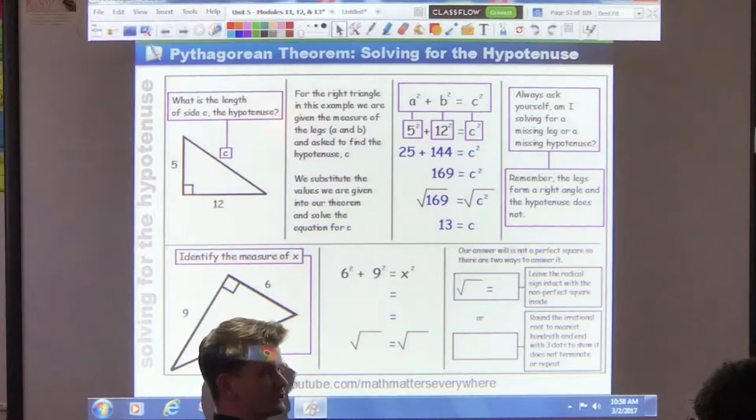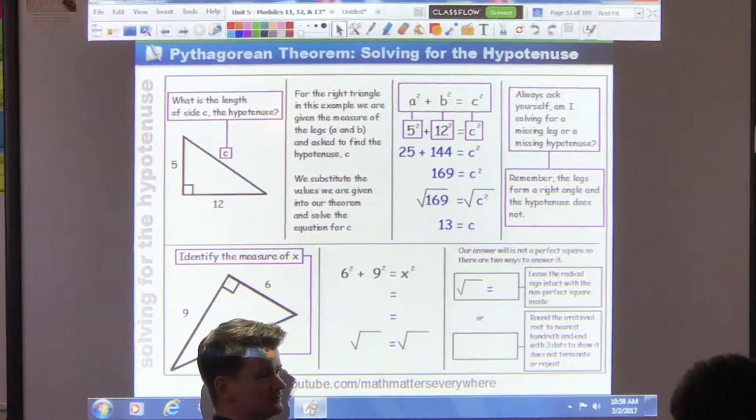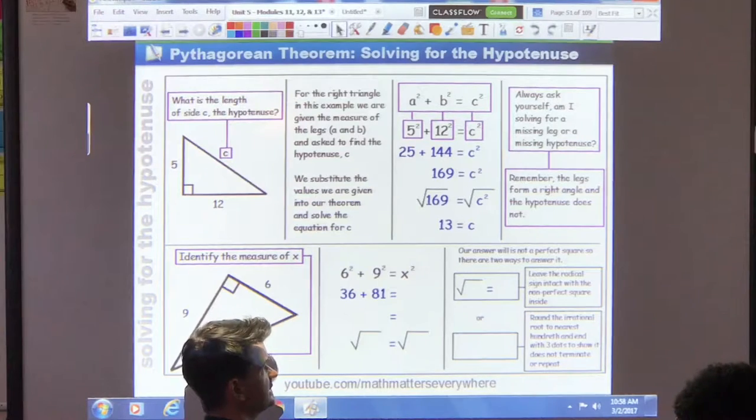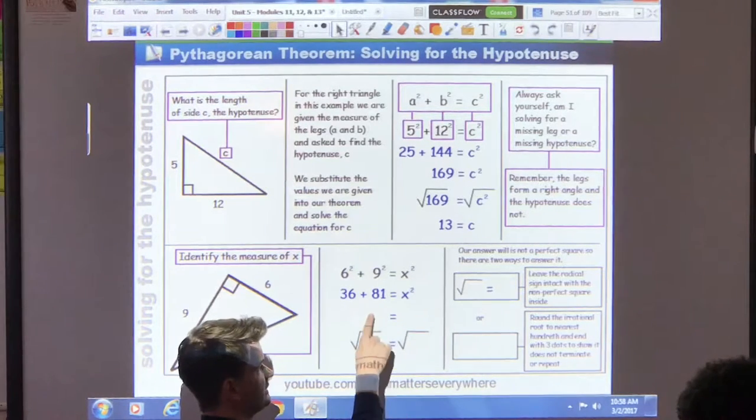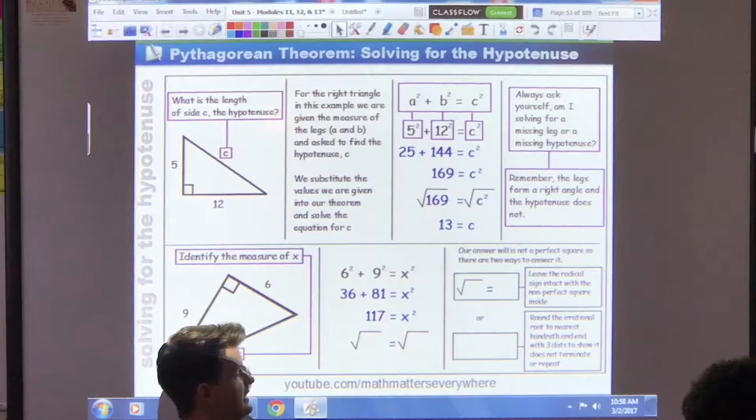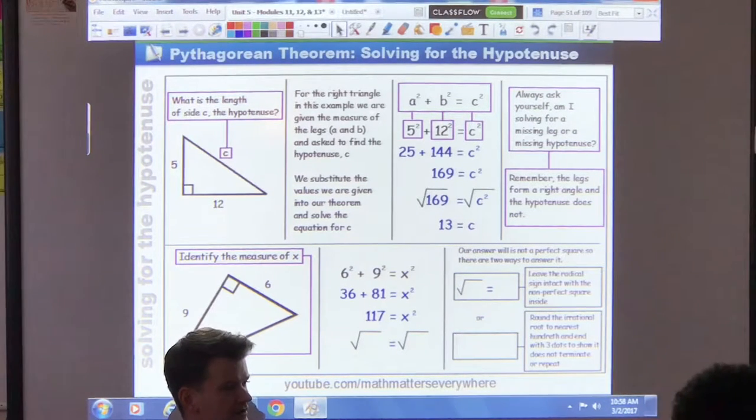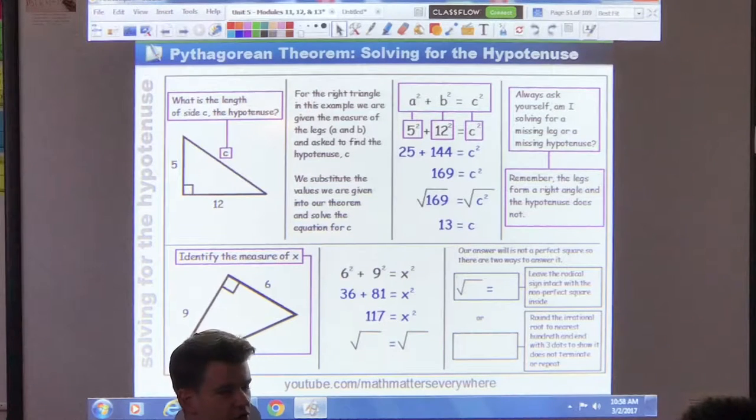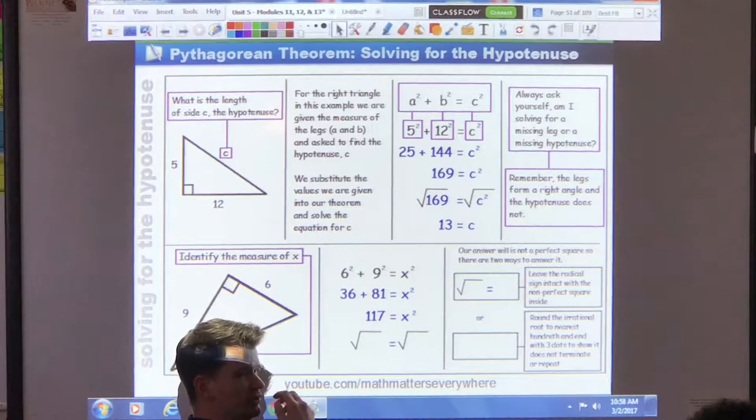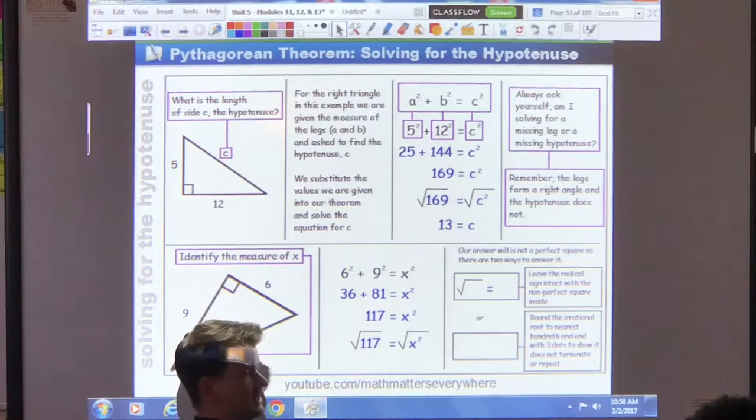We're going to square them. What's six squared? 36. What's nine squared? 81. Now it's going to give you 36 plus 81 equals x squared. You add them together, you will get 117 equals x squared. If you remember your perfect squares, is 117 a perfect square? No. No, it's not.